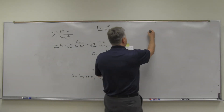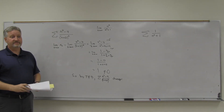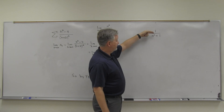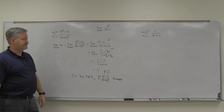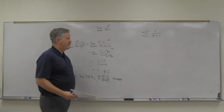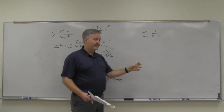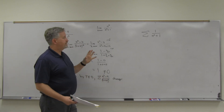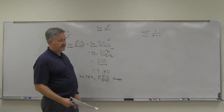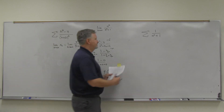For 1/(n²+1): does the test for divergence apply? As n goes to infinity, 1/(n²+1) goes to zero — top degree less than bottom degree — so test for divergence won't help here. It's not geometric, not harmonic. So we use the integral test: integral from 1 to infinity of 1/(x²+1) dx.